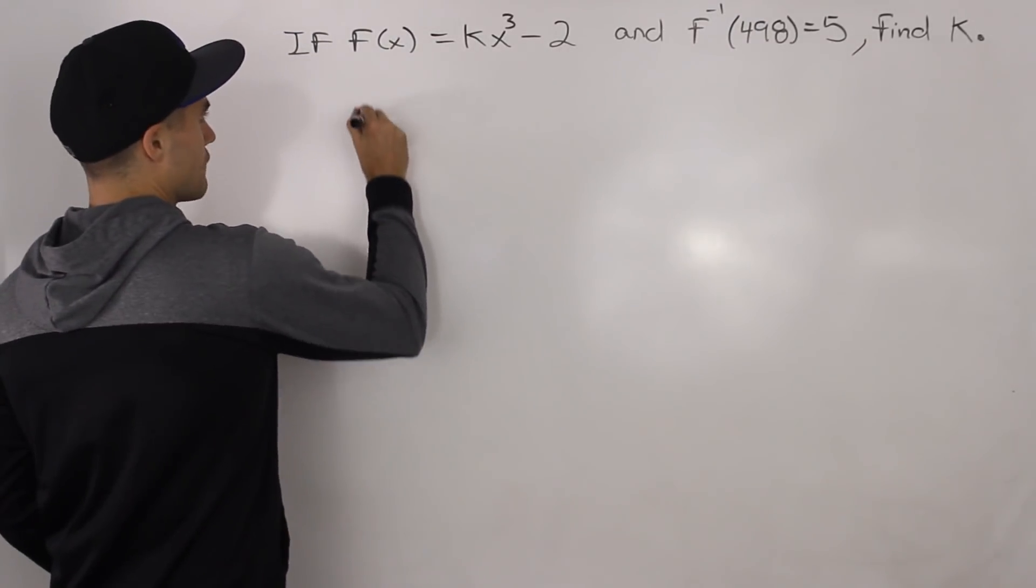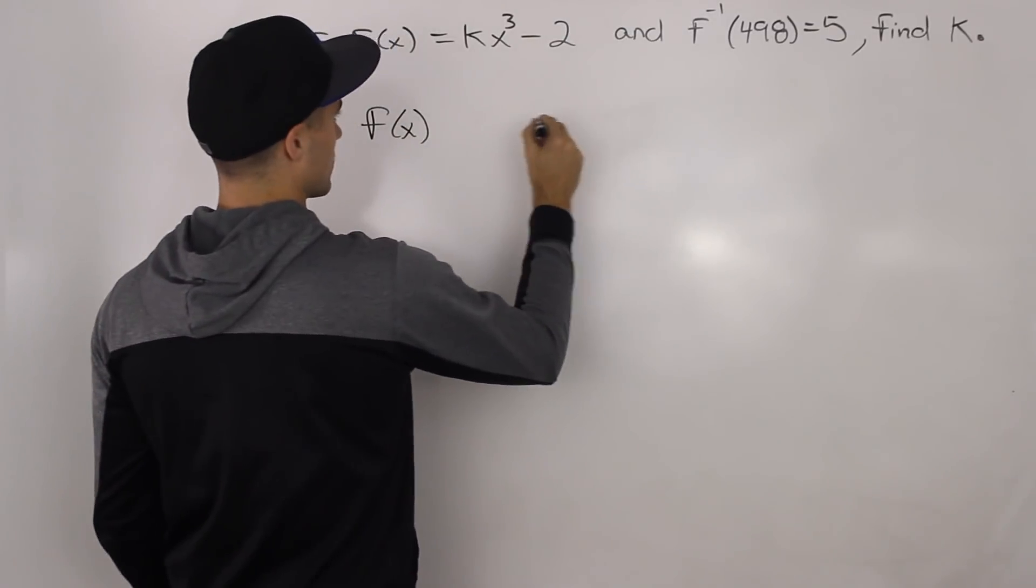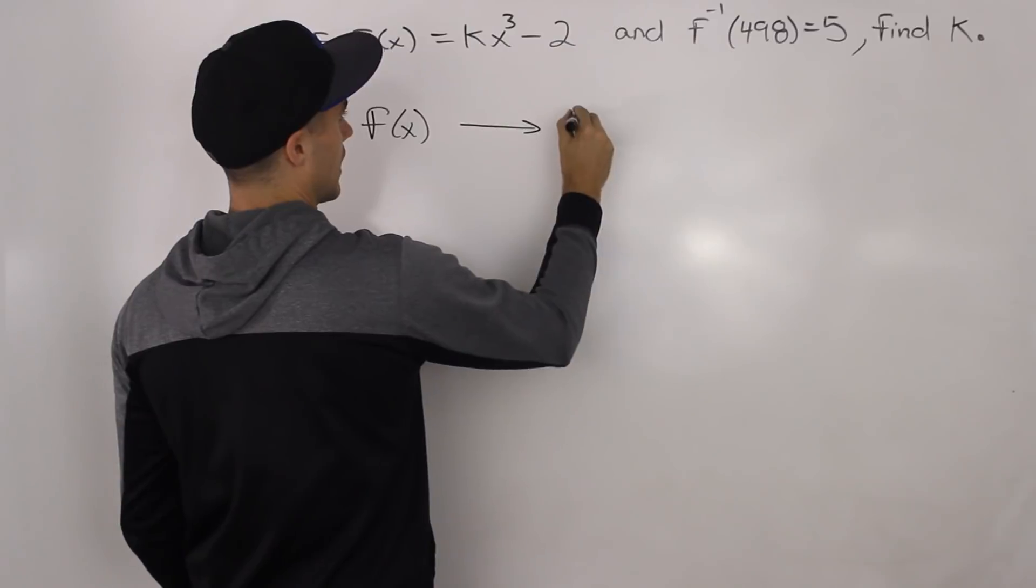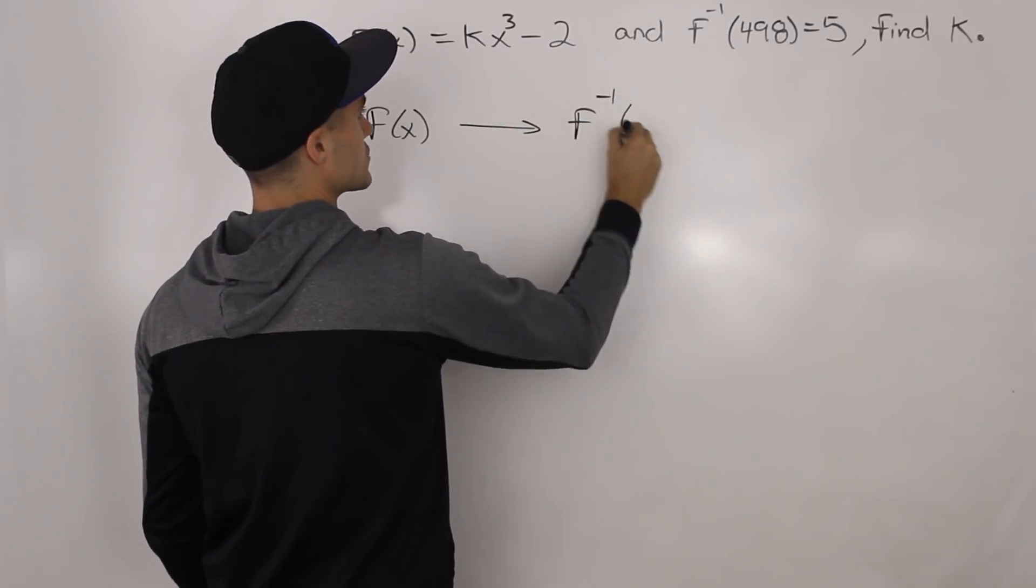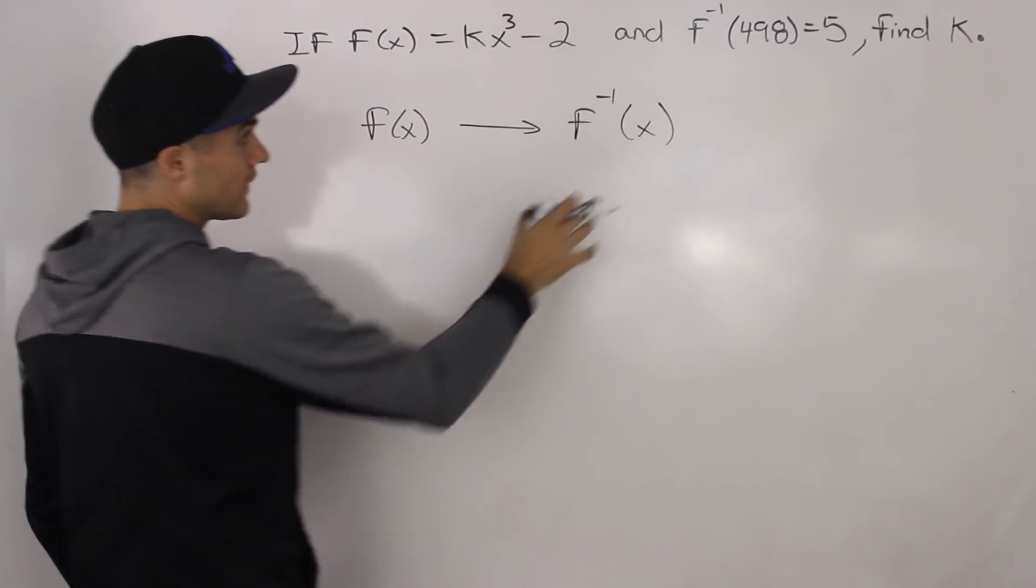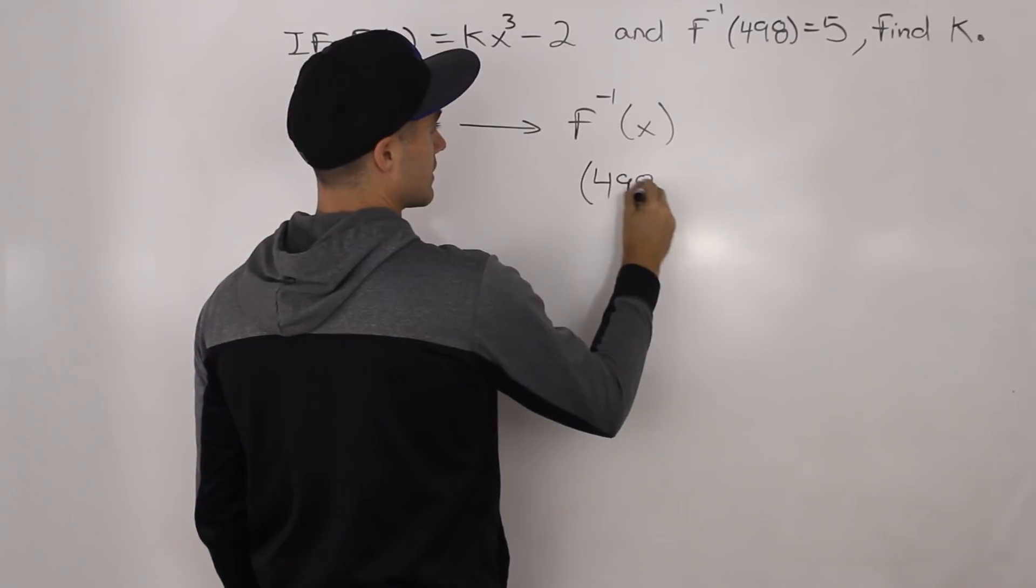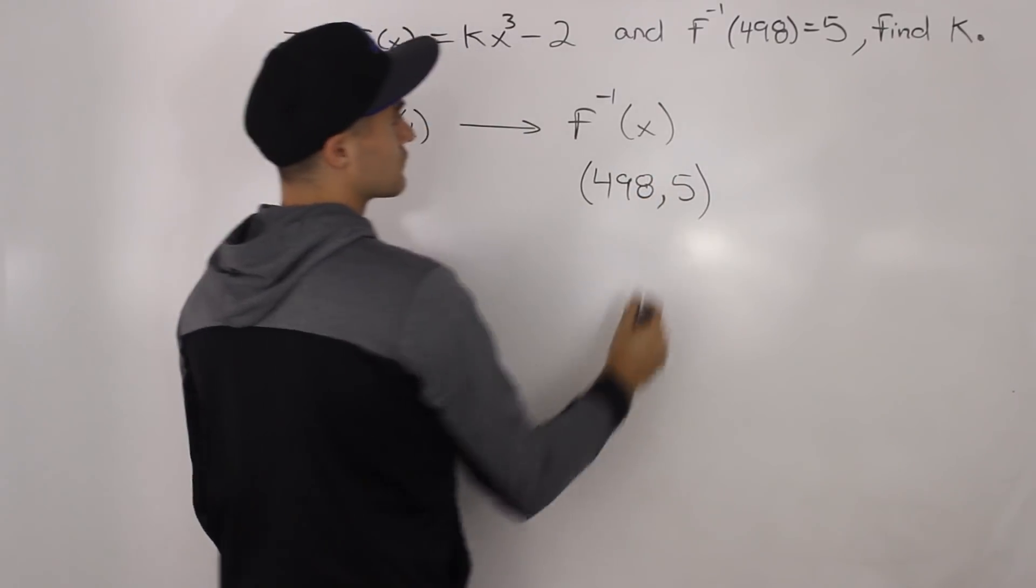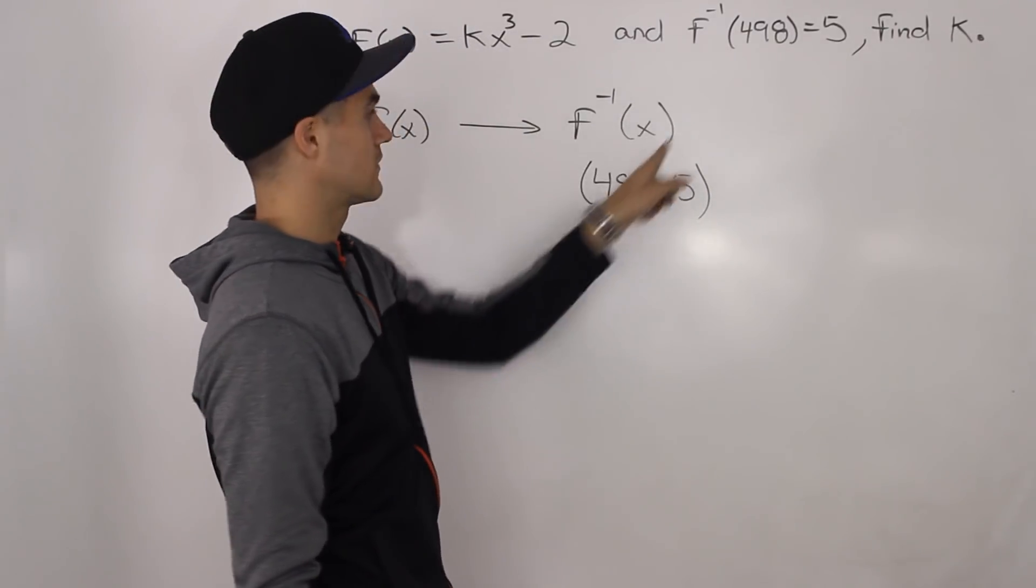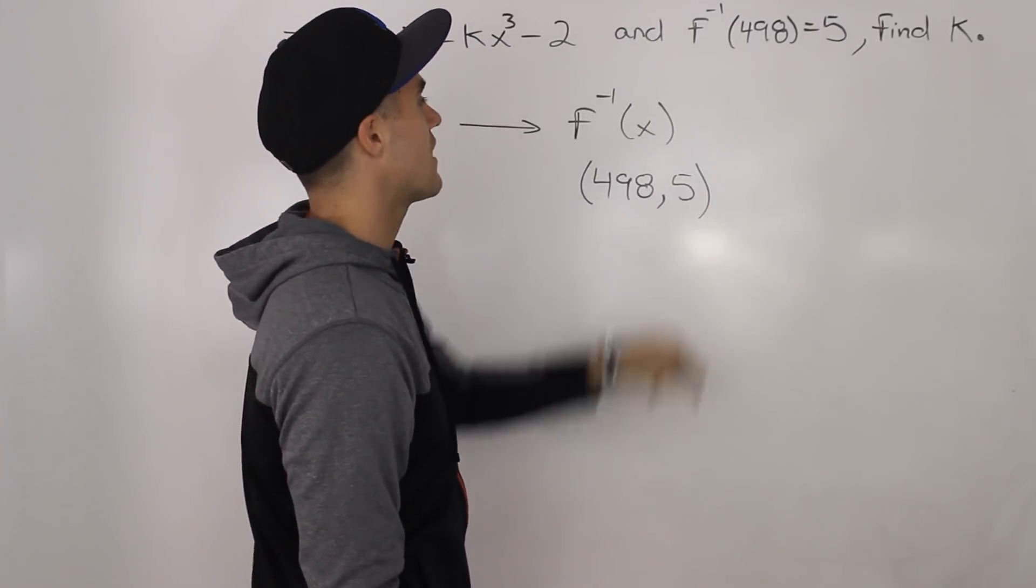Okay, so we have f(x) and we're also given some information about the inverse. So we're told that the inverse contains the coordinate (498, 5). The x value is 498 of the inverse and the y value is 5 of the inverse.